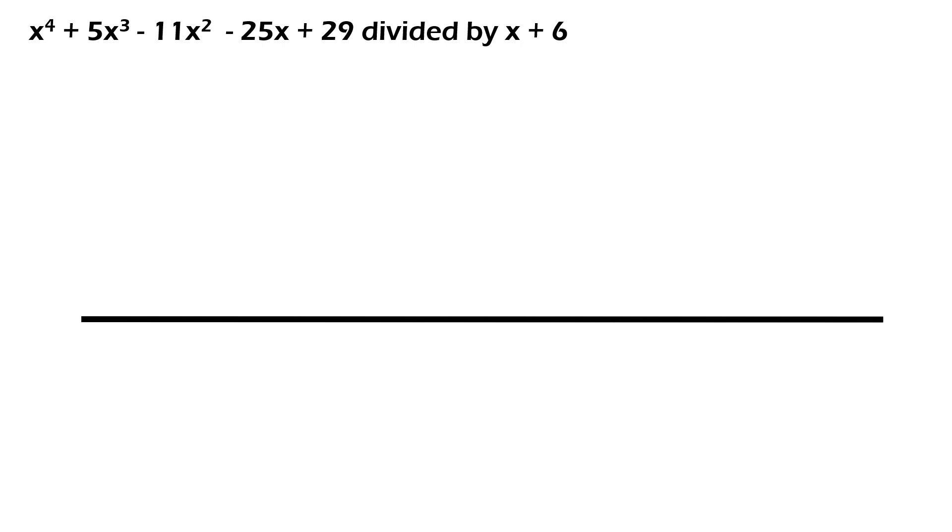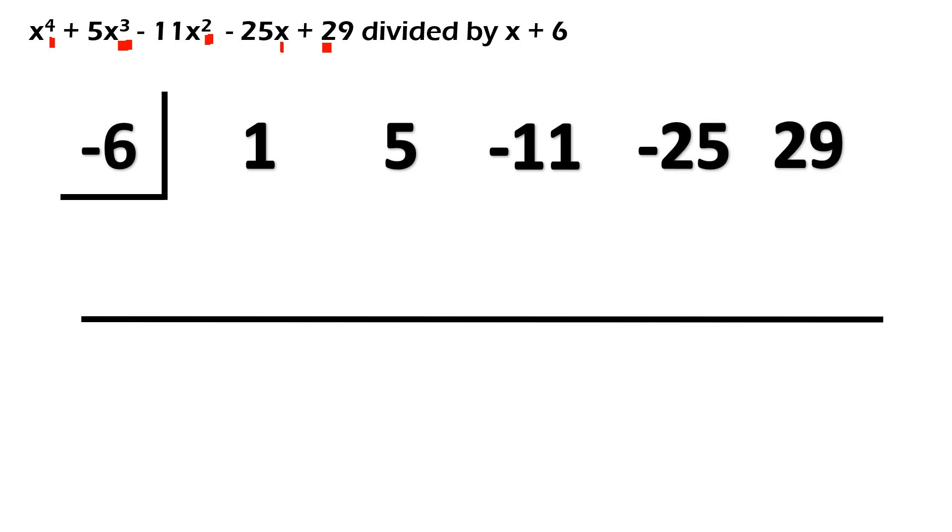Okay, next example natin. Medyo mahaba-haba siya. So, you have X raised to 4 plus 5X cubed minus 11X squared minus 25X plus 29 divided by X plus 6. Now, pwede siyang humaba as high as X raised to 7 depende sa binigay ng teacher. So, hanapin natin yung value ng C. X plus 6, transpose natin si positive 6. So, magiging negative 6 siya dyan. Let me erase this. Next step is check your dividend. Ang powers ba niya complete? So, we have 4, 3, 2, and then you have your X and then your constant. So, let's get the numerical coefficient. So, meron tayong 1X raised to 4 plus 5X cubed minus 11X squared minus 25 plus 29.